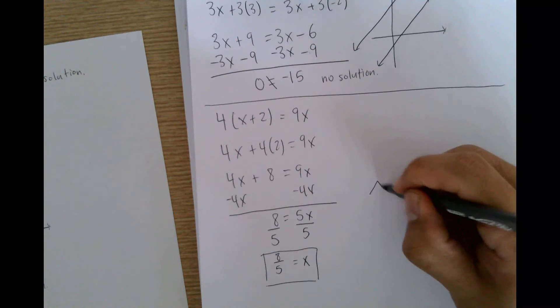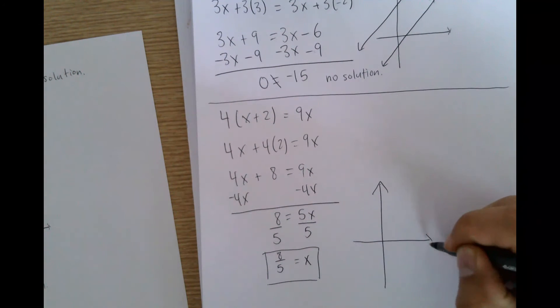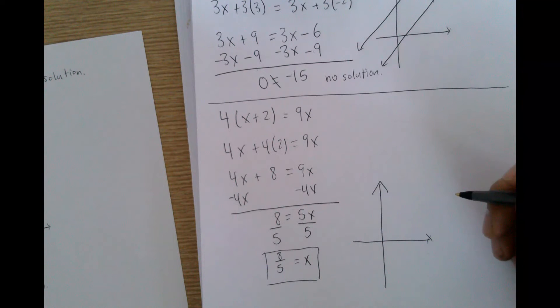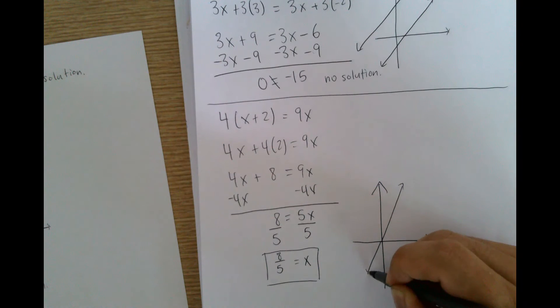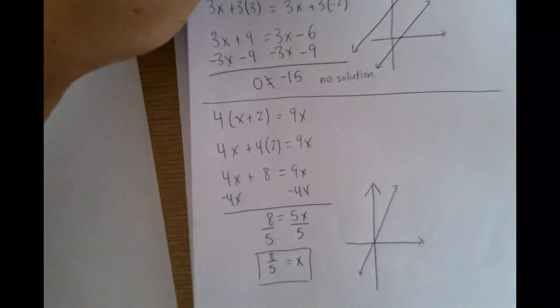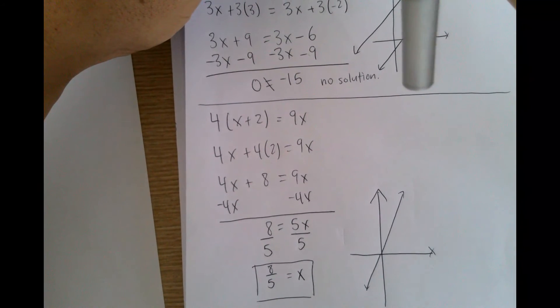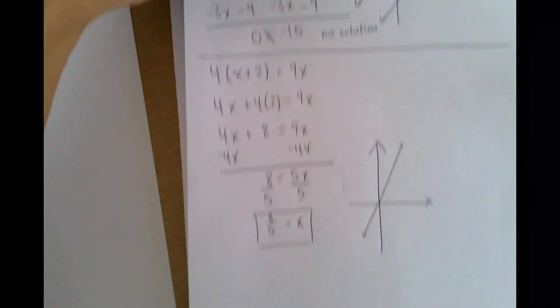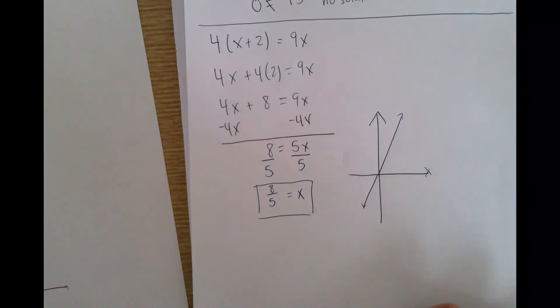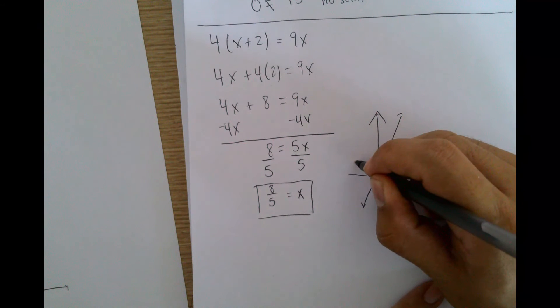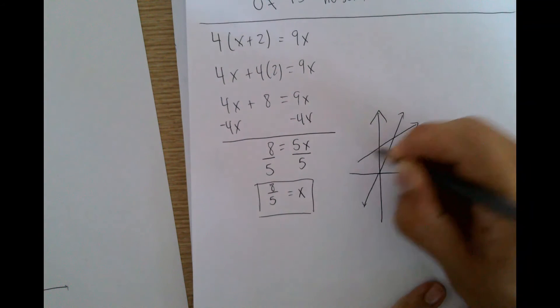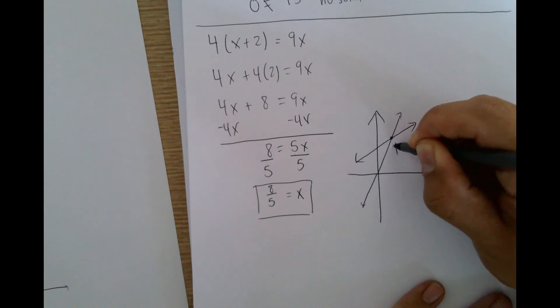So this would be an example of something where you actually have two solutions. So an example would be that you have... Can you spell it out? Yeah, give me a second. So you have something like this, and then you have something else that goes over here. And then where they intersect, that would be the solution.